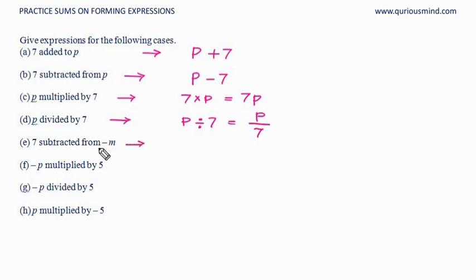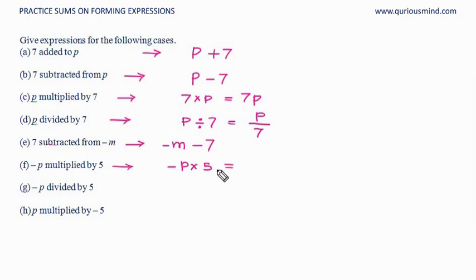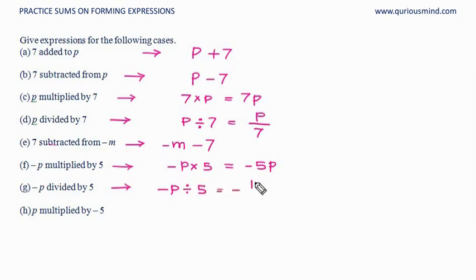7 subtracted from −m: −m − 7. Minus p multiplied by 5: we write the number first, keeping the minus sign, so it is −5p. Minus p divided by 5: −p/5. p multiplied by −5: the number is written first, so −5p.